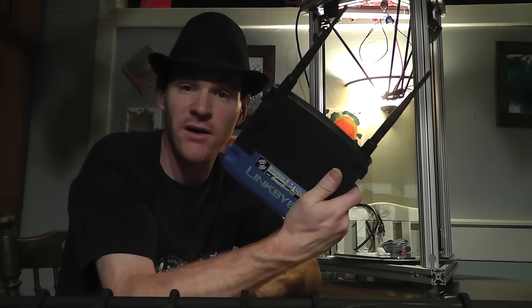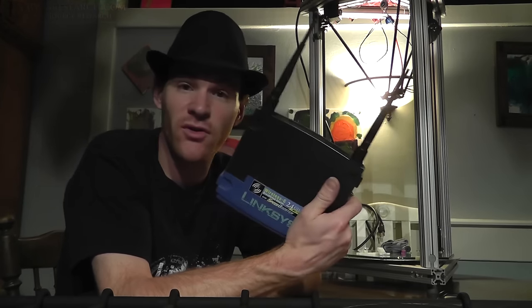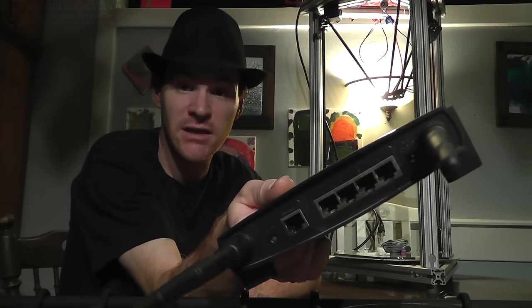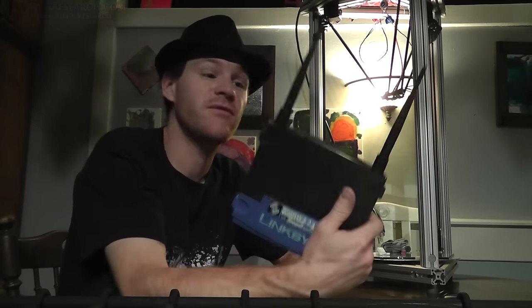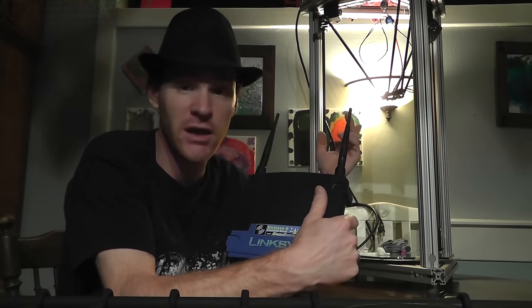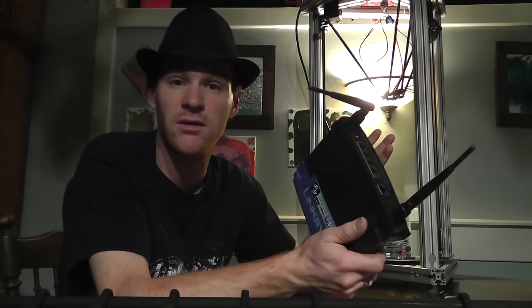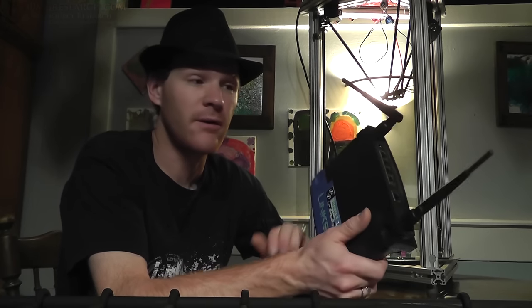You basically just need some sort of a Wi-Fi adapter that you can turn into a repeater, and make sure it has an Ethernet jack, RJ45 Ethernet jack. Just plug it right into the Duet. And as long as you can connect it to the network, or you can connect to this network, you're good to go.